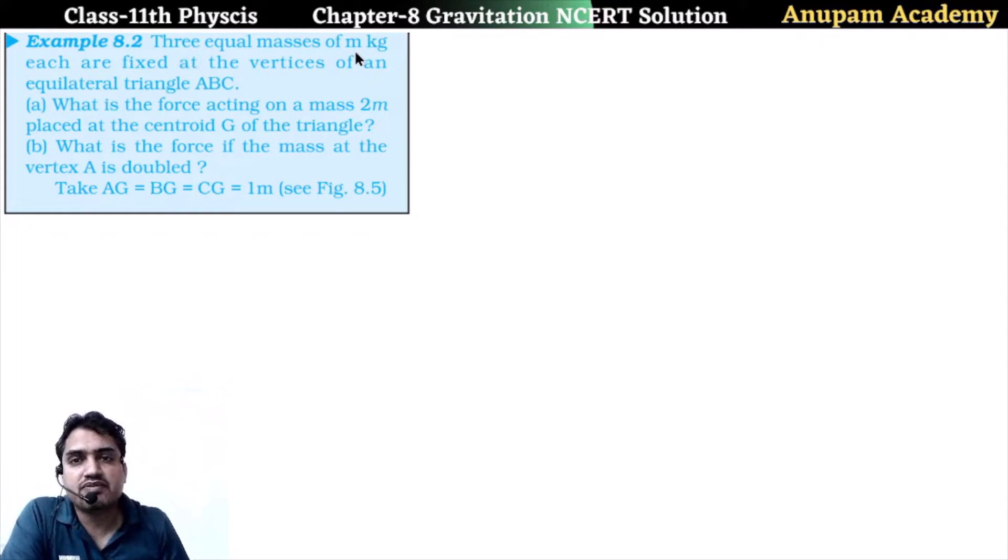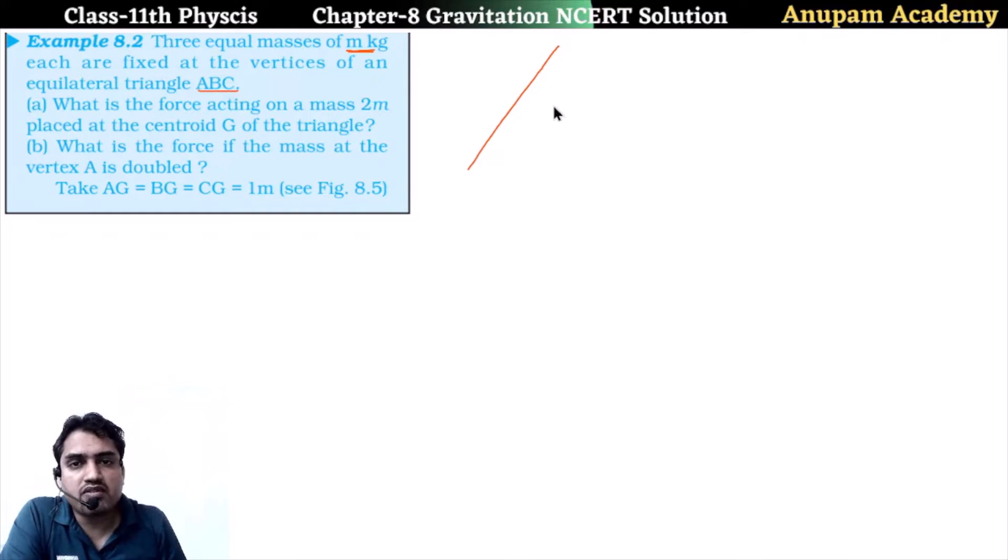The question given is: three equal masses of m each are fixed at the vertices of an equilateral triangle ABC. So we are drawing one equilateral triangle. Let us consider this A, B, and C. Three masses m, m, m are placed at the corner of this equilateral triangle.